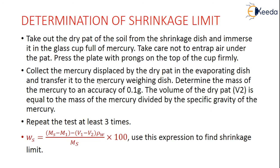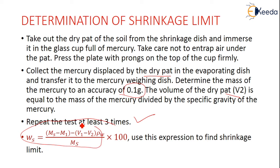Press the plate with prongs firmly on top of the cup. Collect the mercury displaced by the dry pad in the evaporating dish, transfer it to a weighing dish, and determine the mass of the mercury to an accuracy of 0.1 gram. The volume of the dry pad, V2, equals the mass of mercury divided by the specific gravity of mercury. Repeat this procedure at least three times. The shrinkage limit is given by: Ws = (M1 − Ms) / Ms − (V1 − V2) × ρw / Ms.